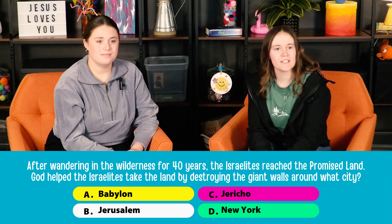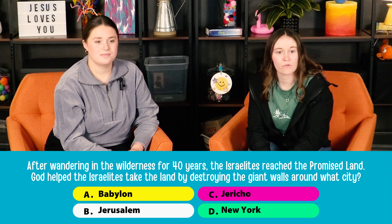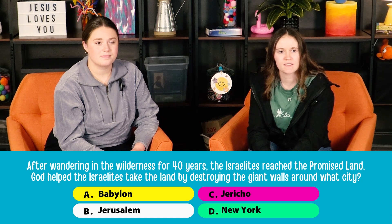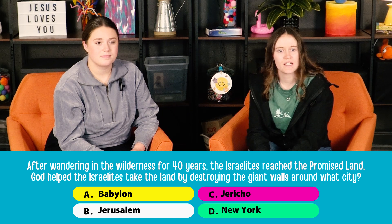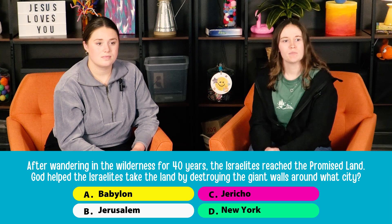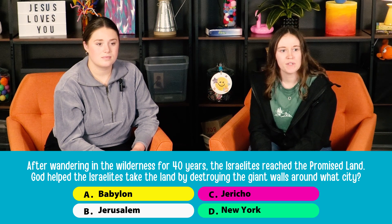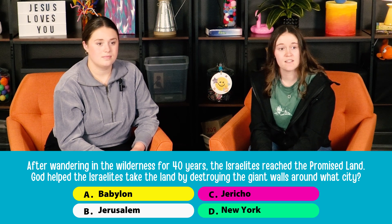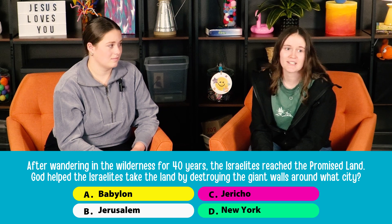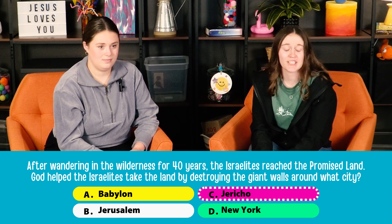After wandering in the wilderness for 40 years, the Israelites reached the promised land. God helped the Israelites to take the land by destroying the giant walls around what city? A: Babylon. B: Jerusalem. C: Jericho. Or D: New York. The correct answer is C — Jericho.